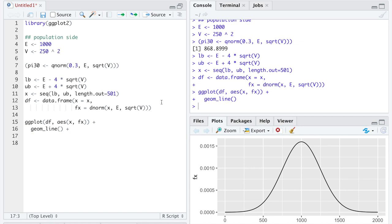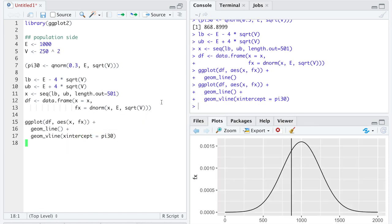Now, to add a vertical line at the x-intercept equal to π 30, we could represent that score, which is 868.9, on the plot by this vertical line. And 868.9, the 30th percentile,